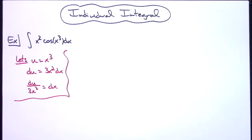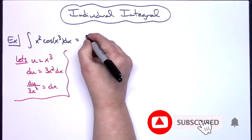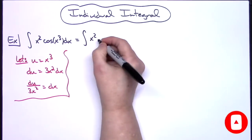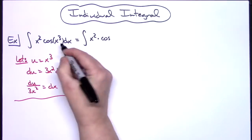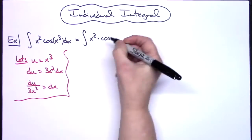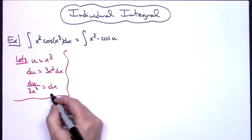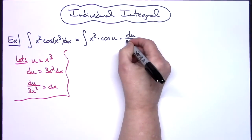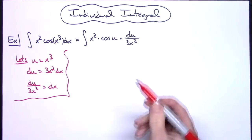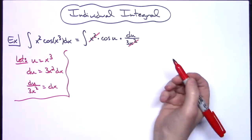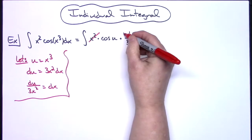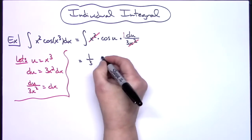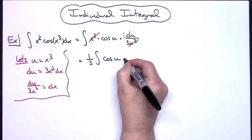We come back to the original integral and start doing substitutions. We leave the x squared, have a cosine, substitute u in for x to the third, and replace dx with du over 3x squared. At this point the x squareds cross out, and we can pull the one third out in front of the integral.